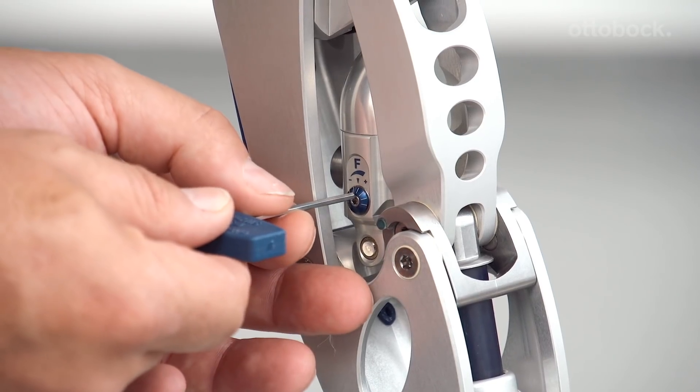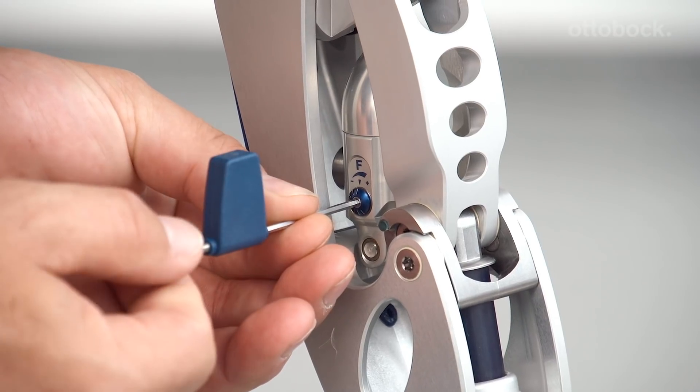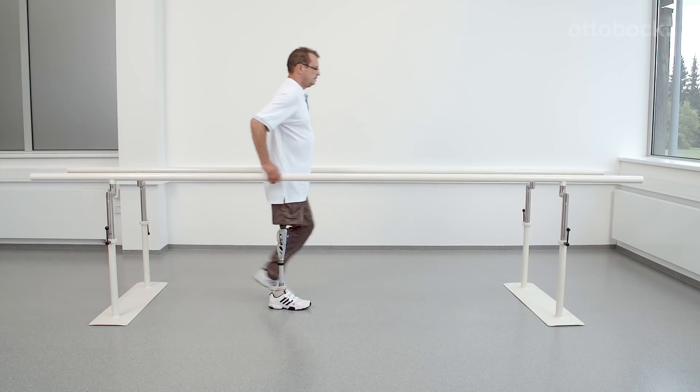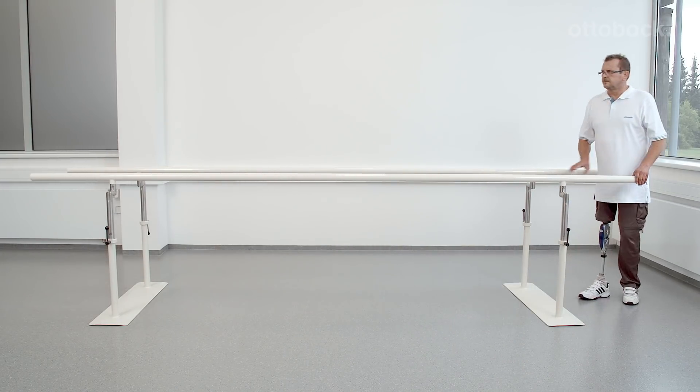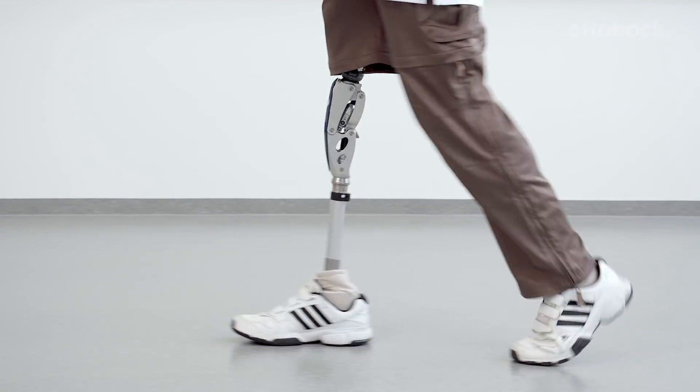The following video sequence will demonstrate how we can use the knee joint at the extreme setting of the swing phase damping. First, the knee joint is shown with the flexion damping set at the minimum. At higher walking speeds, the user has to wait too long for the prosthesis to reach full extension at heel strike.